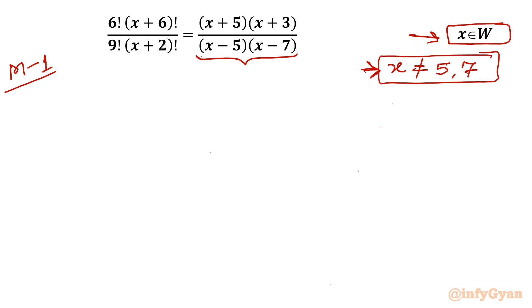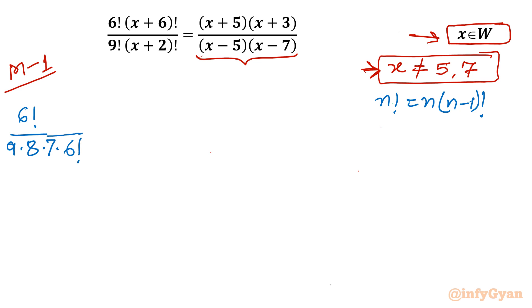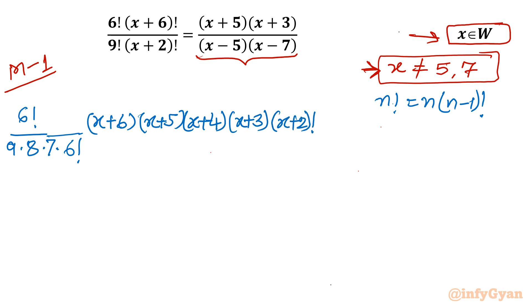Let's expand using the recursive formula. The formula is: n factorial equals n times (n−1) factorial, and so on. On the left-hand side, 6 factorial stays unchanged. 9 factorial I will write as 9 × 8 × 7 × 6 factorial. Now for (x+6) factorial, using the recursive formula: (x+6)(x+5)(x+4)(x+3)(x+2) factorial. Since (x+2) factorial appears in the denominator as well, we can cancel it.